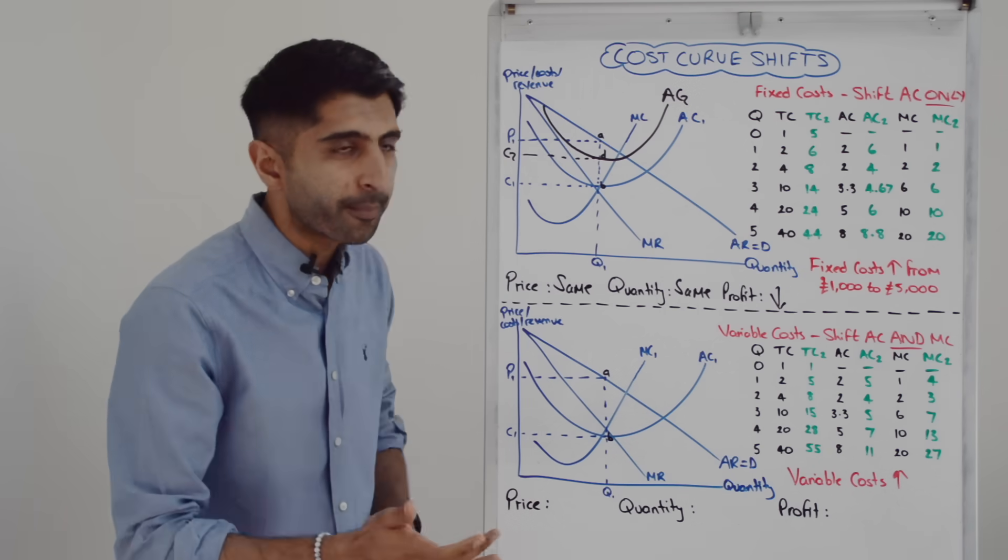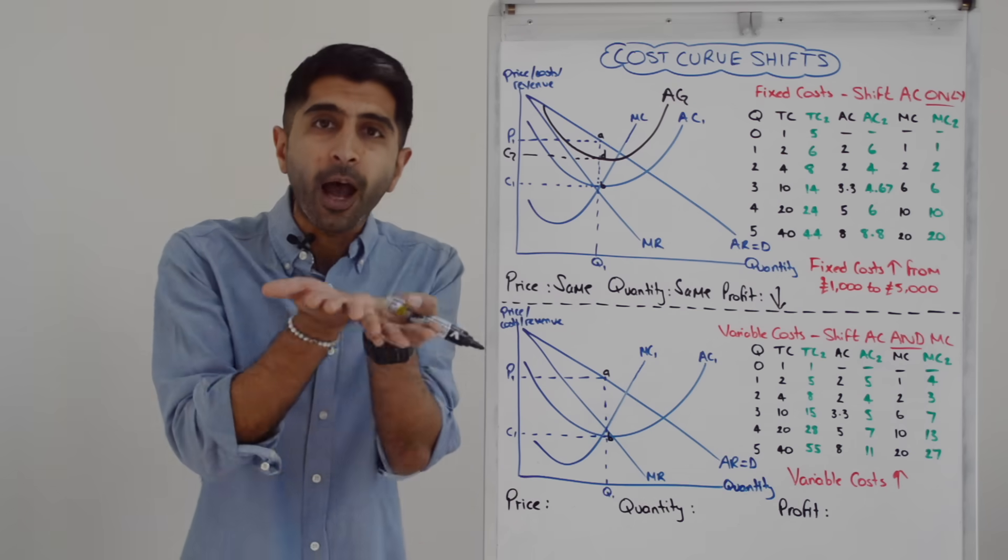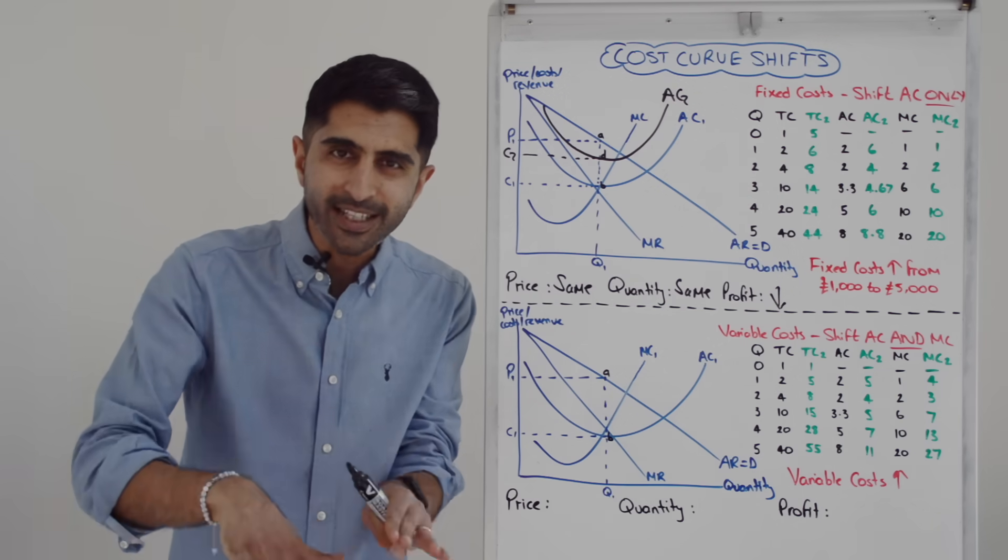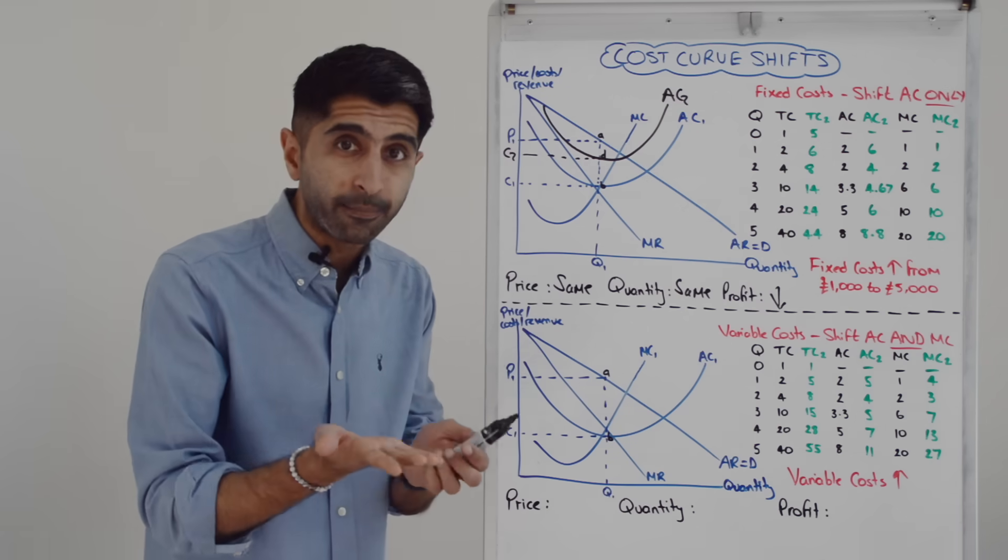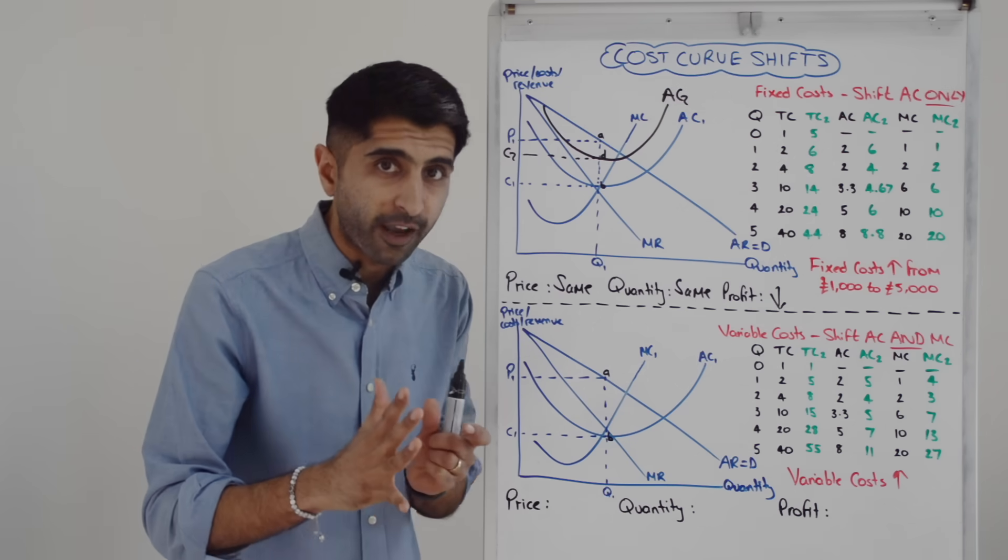With a rise in variable costs, we're going to be shifting average cost and marginal cost upwards. If variable costs were to decrease, you'd be shifting AC and MC downwards. So in this situation, it's an AC, MC shift up. Here's how it would look diagrammatically.